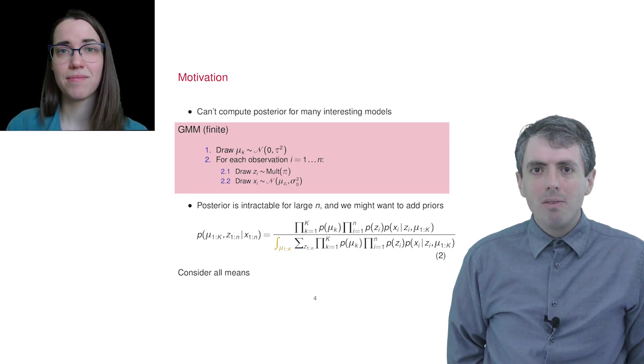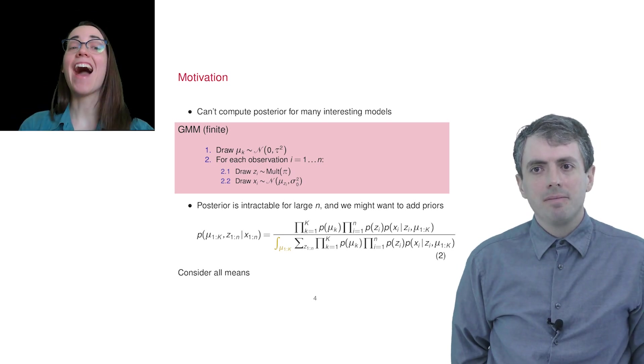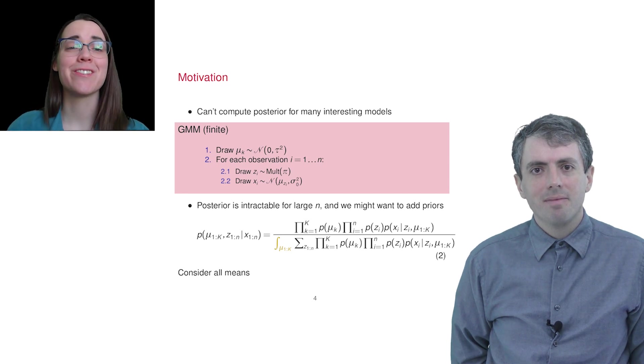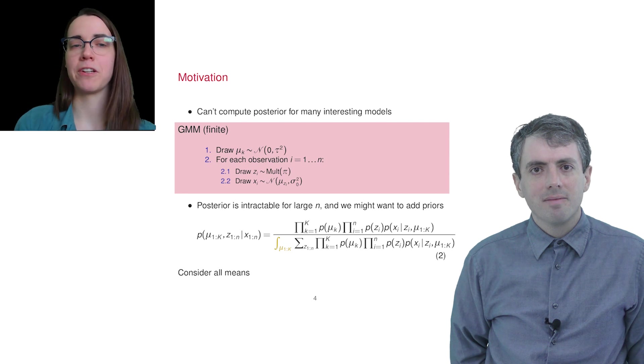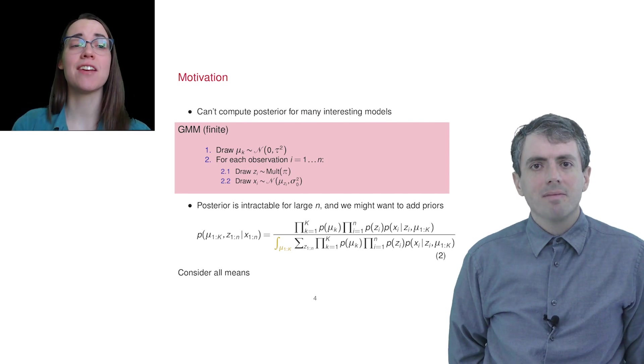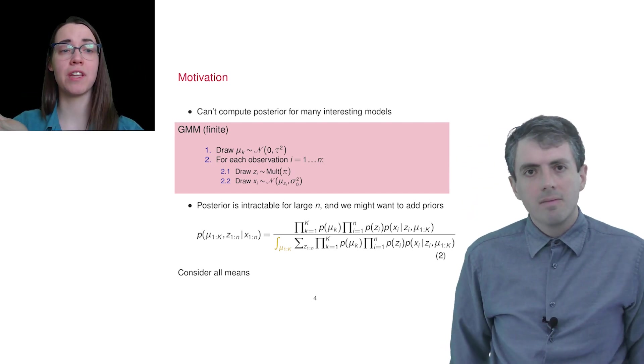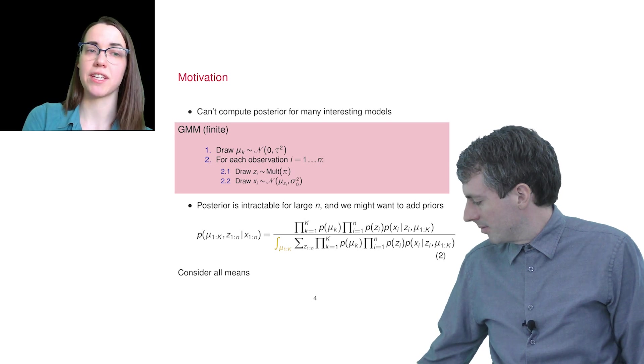Okay, but we could do expectation maximization here, right? I love that instinct because not only is that correct, EM is very closely connected to variational inference. Let's do a brief refresher. Expectation maximization is essentially alternating between guessing the latent variables, updating parameters of the distribution that govern the latent variables, and then guessing the latent variables again.